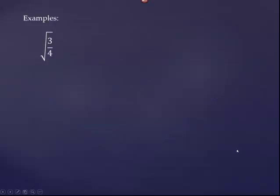So let's look at a simple example: the square root of three-fourths. We have a fraction in our radicand. Any time we see that, the first thing we're going to do is rewrite this as the square root of three divided by the square root of four. That's the quotient rule for radicals. This rule basically says that the radical of a quotient is the same as the quotient of the radicals. So whenever we see a fraction, we're automatically going to rewrite it and break it up into two parts.